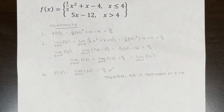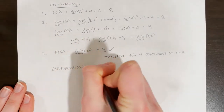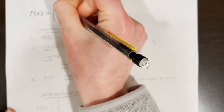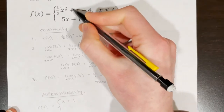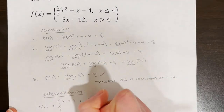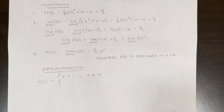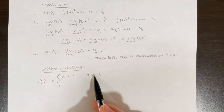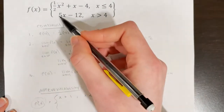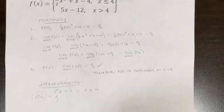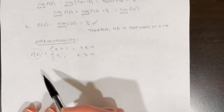However, this is just the first step in finding differentiability at x equals 4. Now to specifically determine differentiability, I need to find f prime of x. For the top part of the function, the 2 becomes a coefficient and we drop the power by 1, giving x plus 1, when x is less than 4. I'm writing less than 4 for now because I'm testing whether f prime of x exists at x equals 4. For the bottom portion, the derivative of 5x minus 12 is 5, since 12 is a constant, when x is greater than 4. So now I have my function for f prime of x.